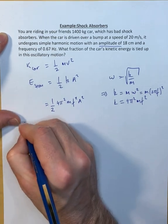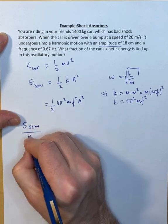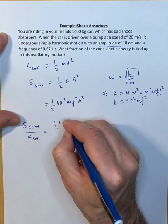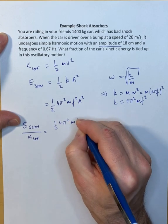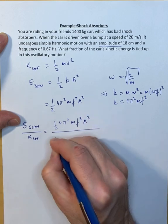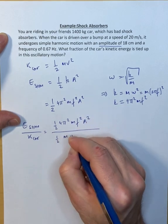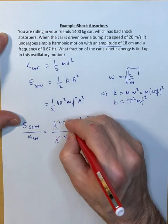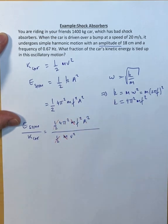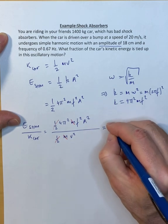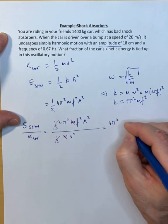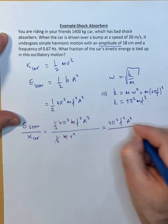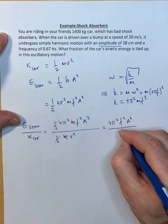The ratio of the two is then going to be one half 4 pi squared m f squared a squared divided by one half m v squared. So the one half drops out, the mass drops out. You're left with 4 pi squared times f squared times a squared divided by v squared.